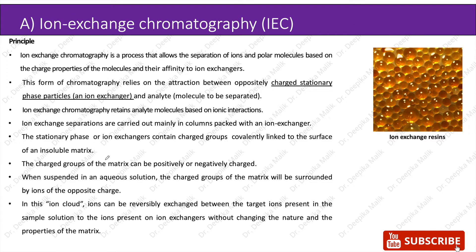The first type is ion exchange chromatography. Ion exchange chromatography is a process that allows the separation of ions and polar molecules based on the charge properties of the molecules and their affinity to ion exchangers. Ion exchangers are basically charged stationary phase particles. This form of chromatography relies on the attraction between oppositely charged stationary phase particles and analyte molecules, retaining analyte molecules based on ionic interaction.